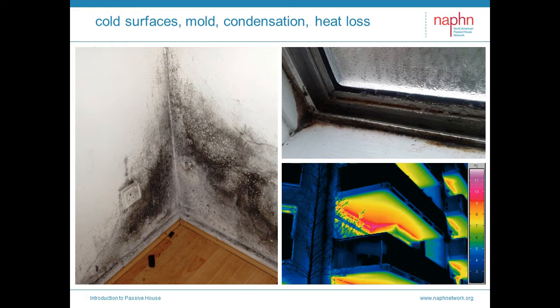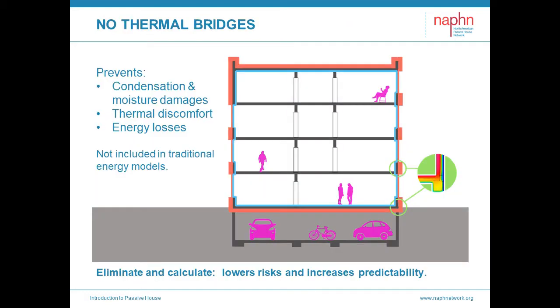The colder interior surfaces can cause condensation, as we see on the window frame at the upper right and mold on the left. To overcome them, typically we overheat — we're treating the symptom with brute force. With passive house, we avoid the problem in the first place. Thermal bridges typically occur at junctures where the floor meets the wall, or wall meets the roof, or at window frames meeting walls, balcony connections, and structural connections. The energy loss causes thermal discomfort, condensation, and moisture damages.